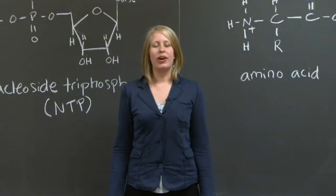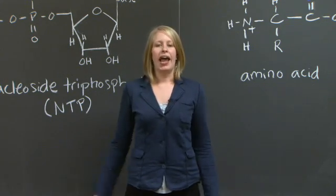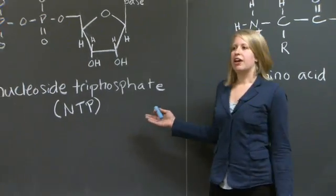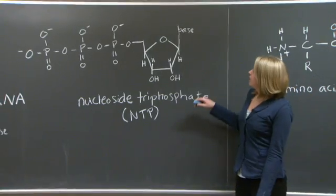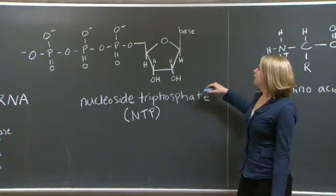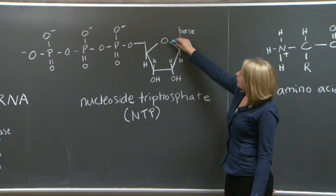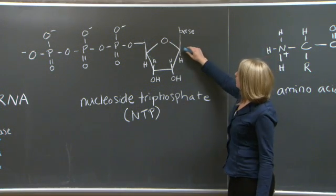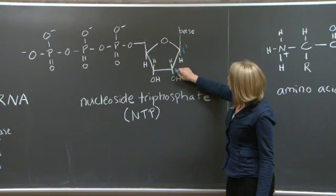In this clip we're going to discuss the numbering and labeling conventions of RNA and of protein. Here we have a nucleoside triphosphate or NTP. This NTP is numbered on each carbon, and we're going to start here to the right of this oxygen and label one prime, and proceed two prime.